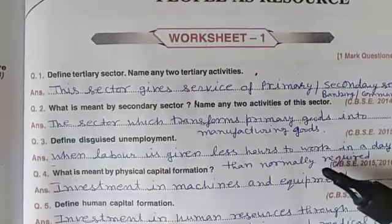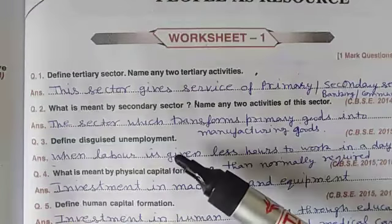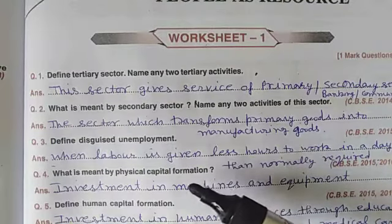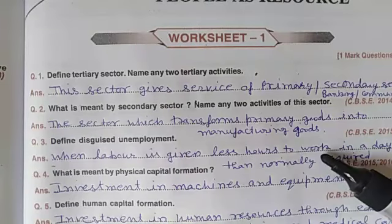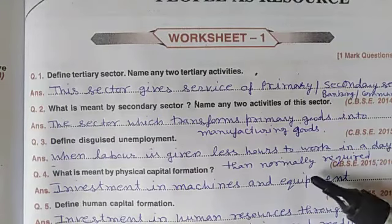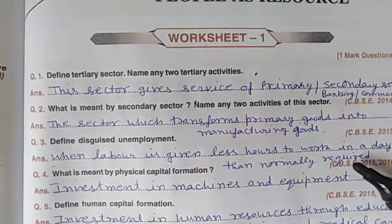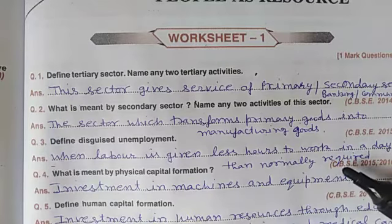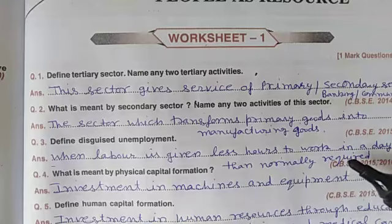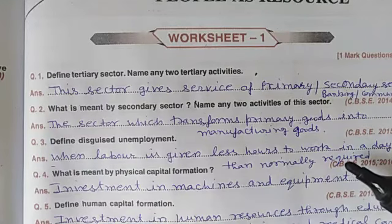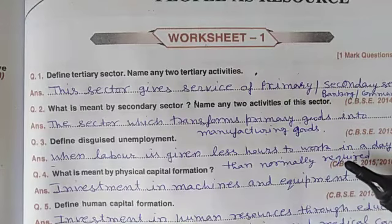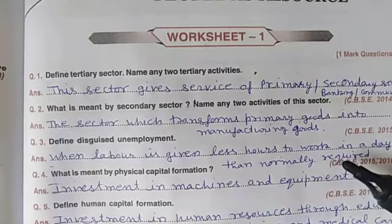Third question: define disguised unemployment. Disguised unemployment is when labour is given fewer hours to work in a day than normally required. The persons do not get full work but they appear to be employed. They think they are employed, but actually they are not fully employed.